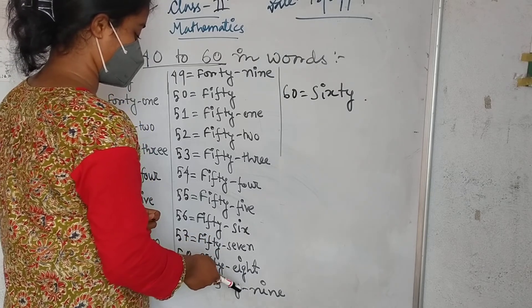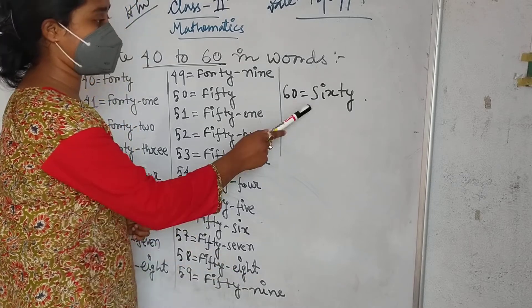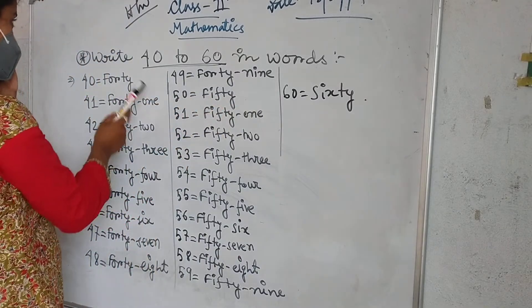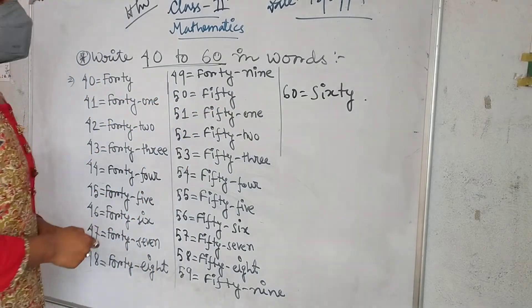Then 59: F-I-F-T-Y, fifty, N-I-N-E, nine, fifty-nine. Then 60: S-I-X-T-Y, sixty. Okay? So, then write in your notebook. Okay? Thank you.